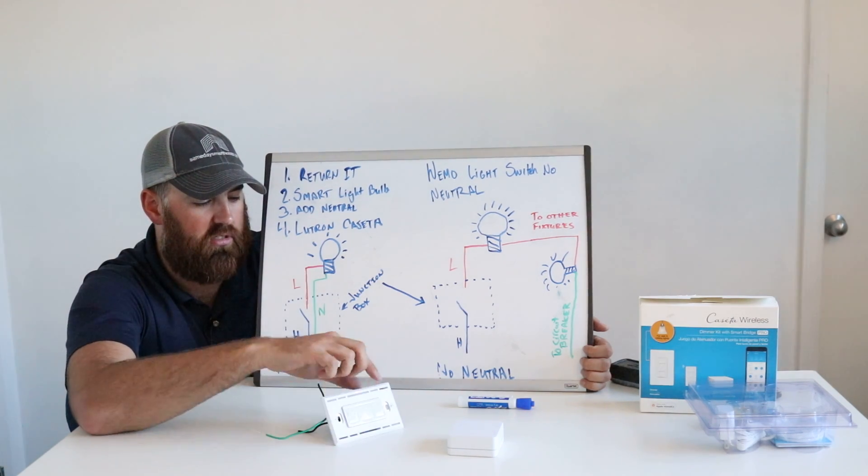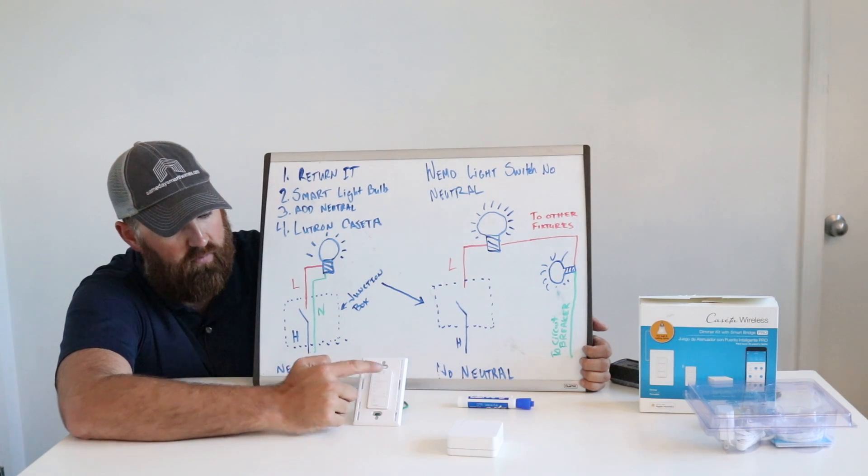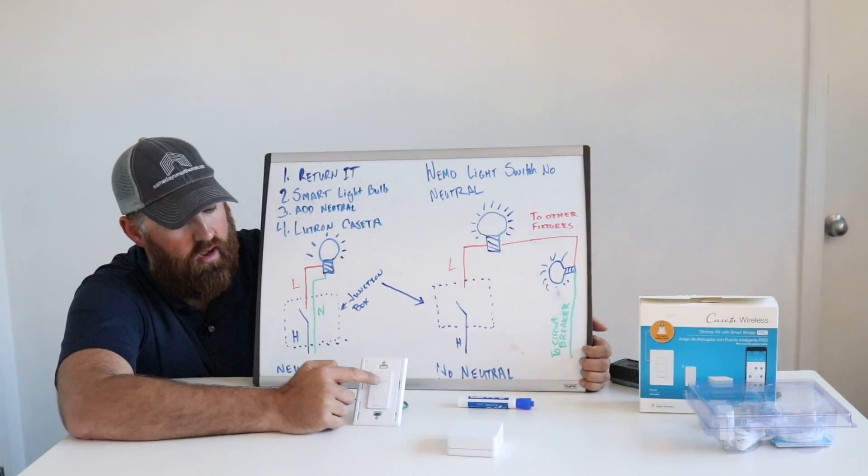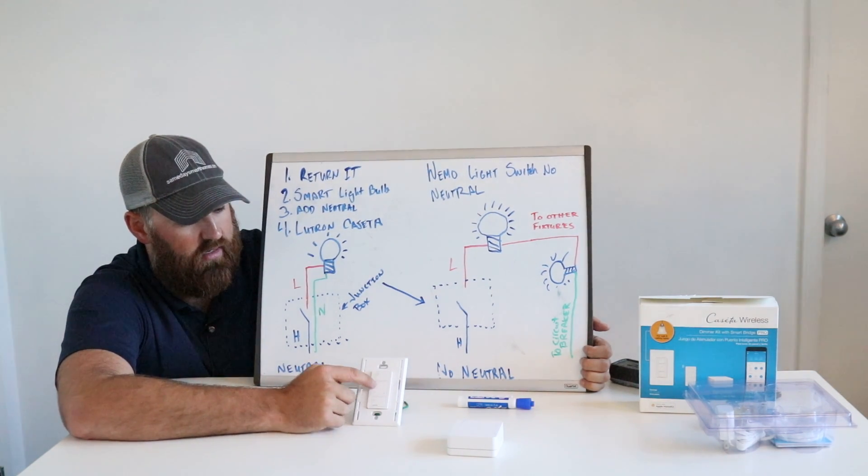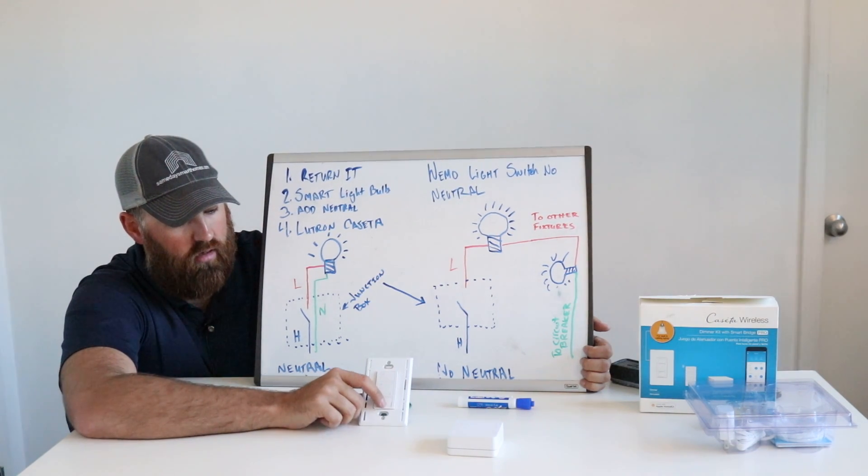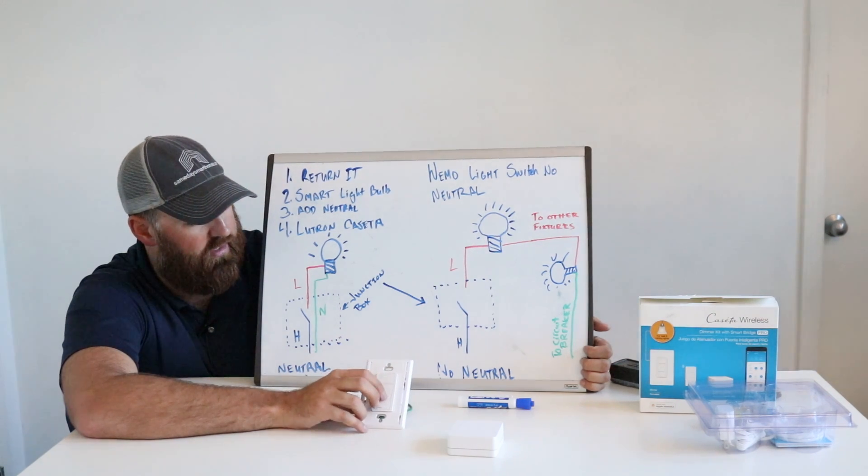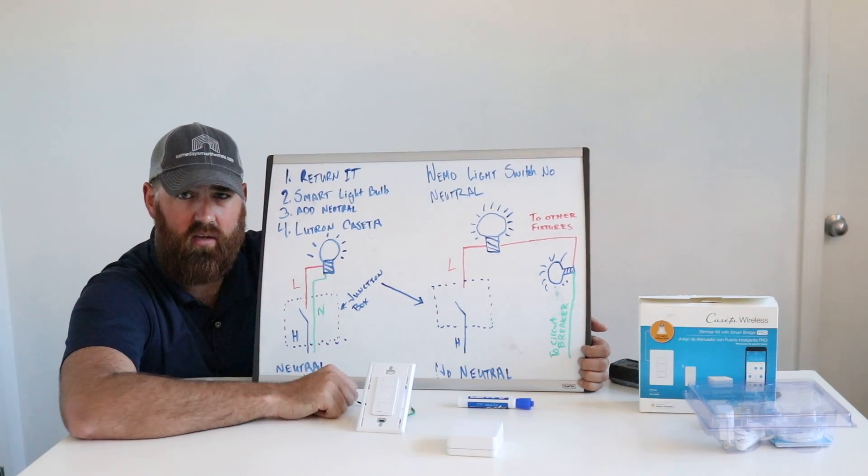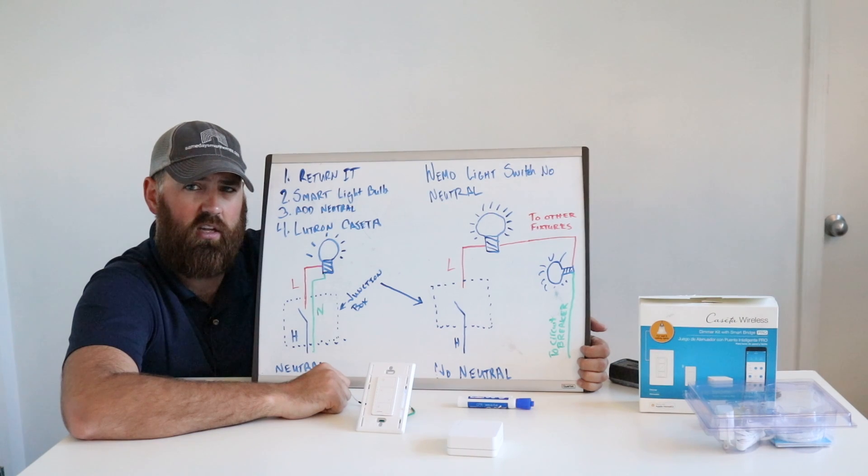And what I like about these switches is that they are dimmer switches. And you can turn them on and off by clicking the buttons here at the top and the bottom. And then you can dim them by pressing these adjustment tabs right here. So you got on, off, or you can adjust the brightness and dimmer with this. And these are really simple to install. One less wire than the Wemo light switch. So very simple to install this Caseta light switch.